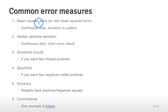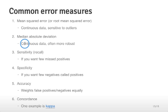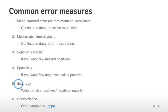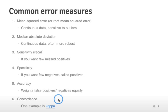Some other common error measures are mean squared error, which was discussed with k-nearest neighbors and regression — it's used for continuous data and is often sensitive to outliers. You might also use the median absolute deviation, which is also for continuous outcomes and may be more robust. Sensitivity and specificity apply to binary outcomes, and sensitivity is also sometimes called recall. You can also look at accuracy for binary data, which weights false positives and false negatives equally, or concordance, which is used when you have multiple predictors and want to know how well they all coordinate in making predictions.